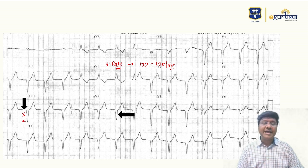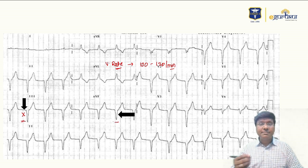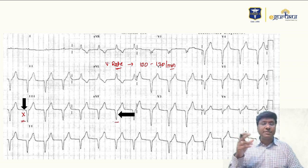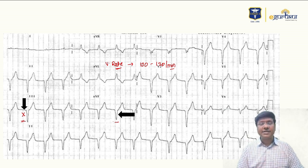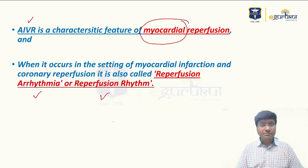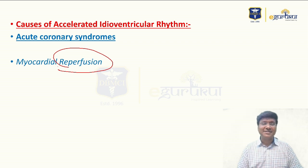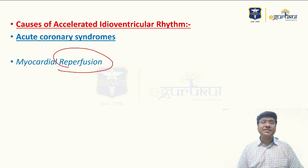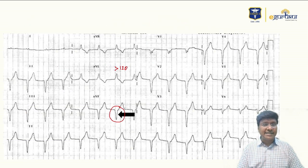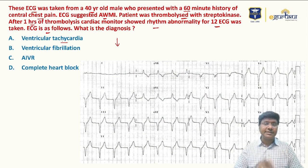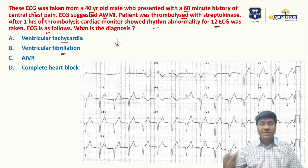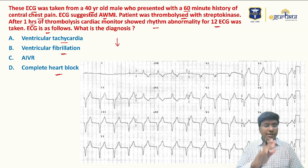The wide QRS complex occurs because the impulse originates from the ventricle, where conduction velocity is slow, causing QRS duration greater than 120 milliseconds. Our patient had anterior wall MI, was thrombolyzed with streptokinase, and one hour later developed AIVR. The other options are ruled out by rate: ventricular tachycardia is 200–300, ventricular fibrillation is 300–400, and complete heart block causes bradycardia.